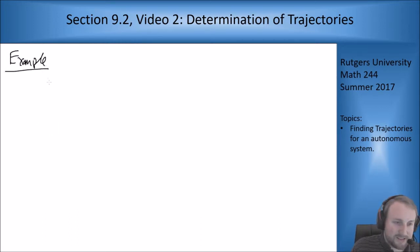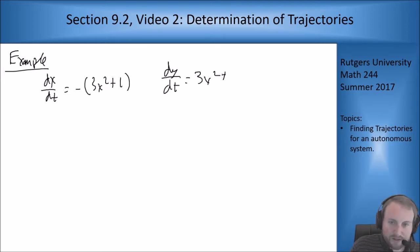So the example is this one. Say we have the system dx/dt equals negative 3x squared plus 1, and dy/dt is 3x squared plus 6xy.